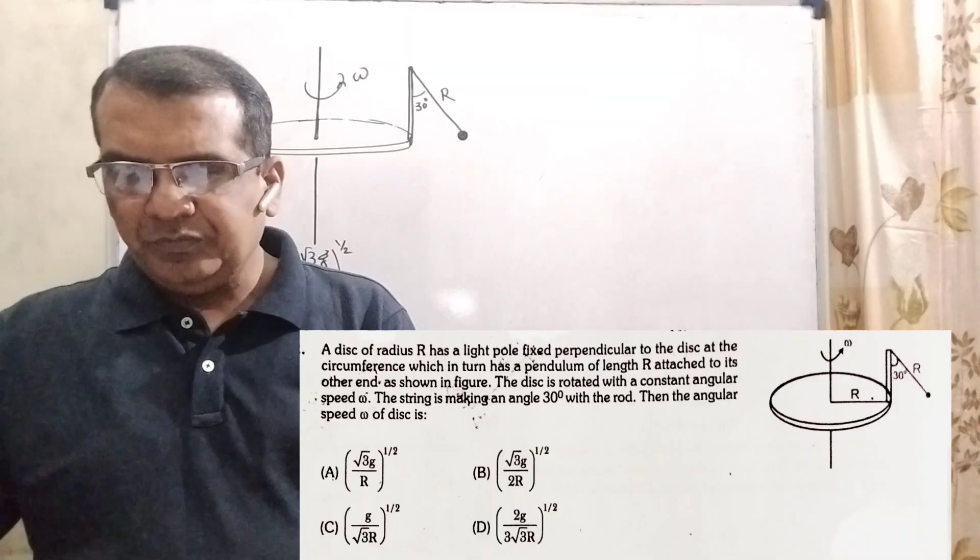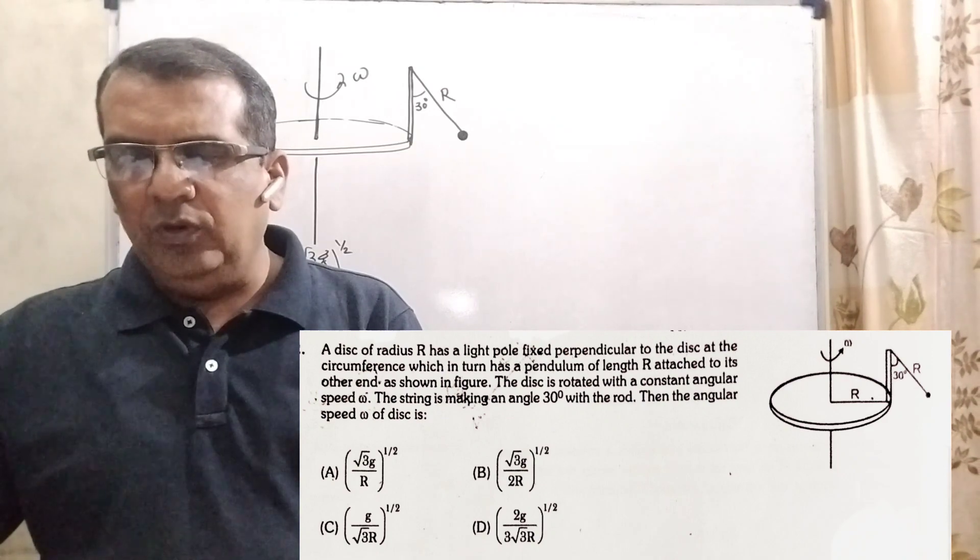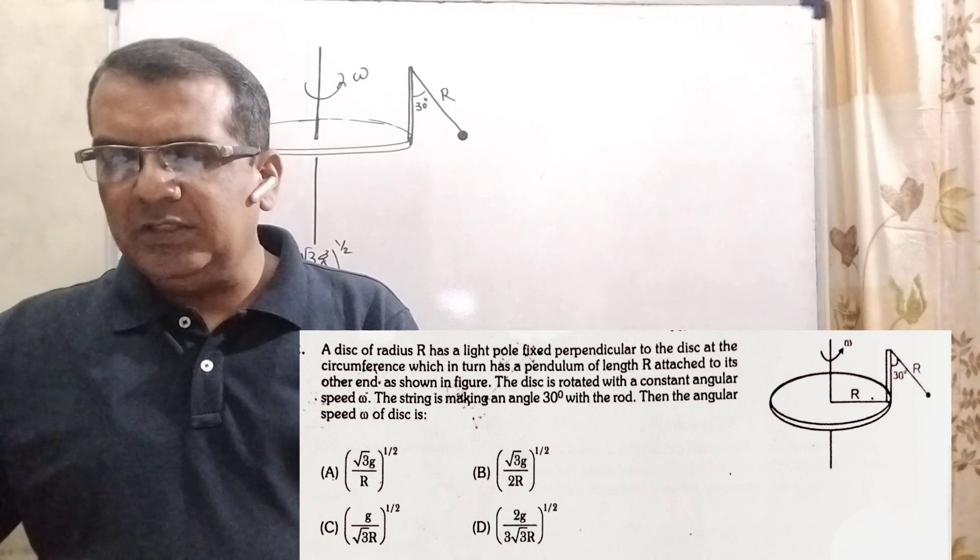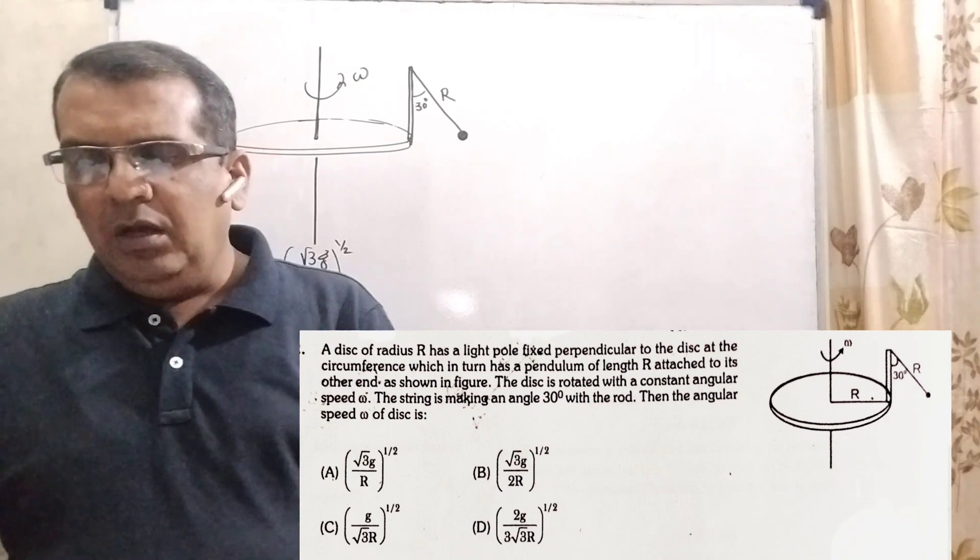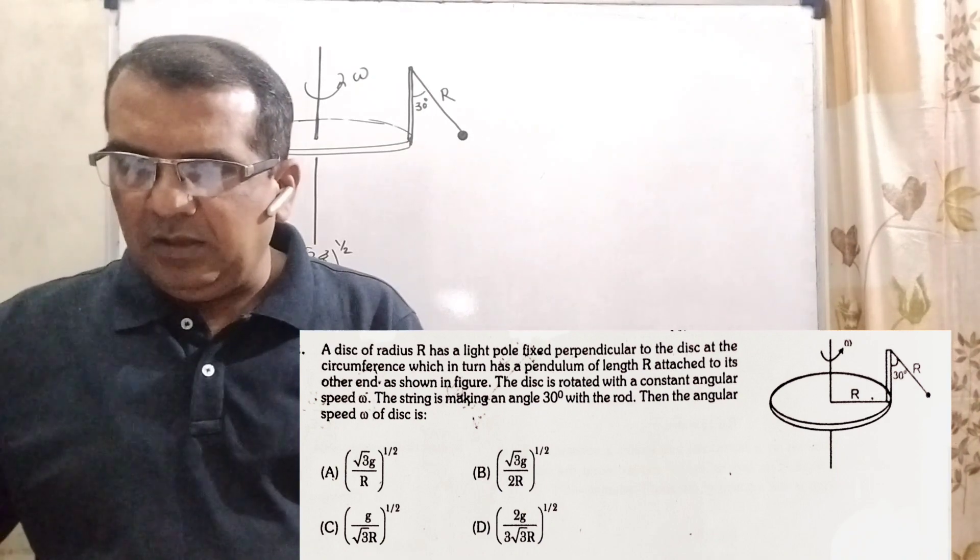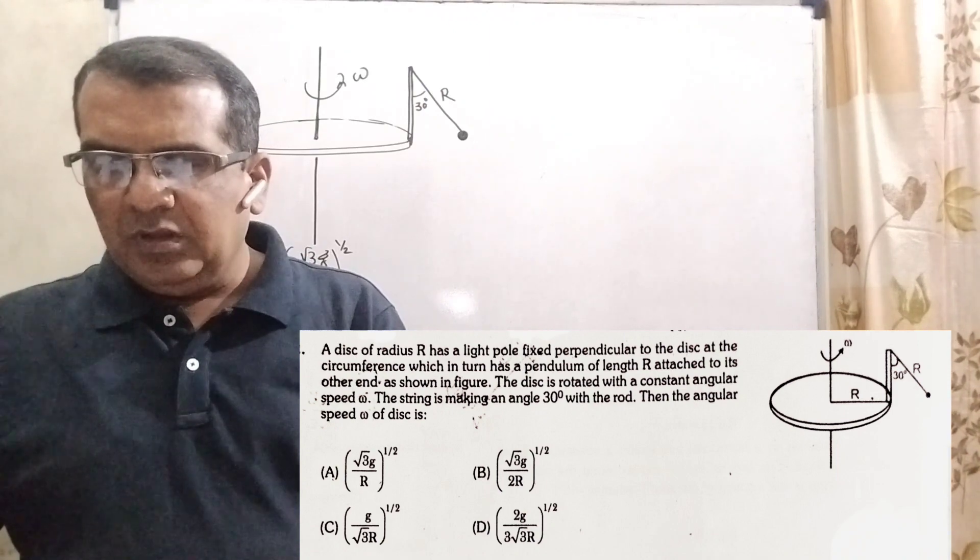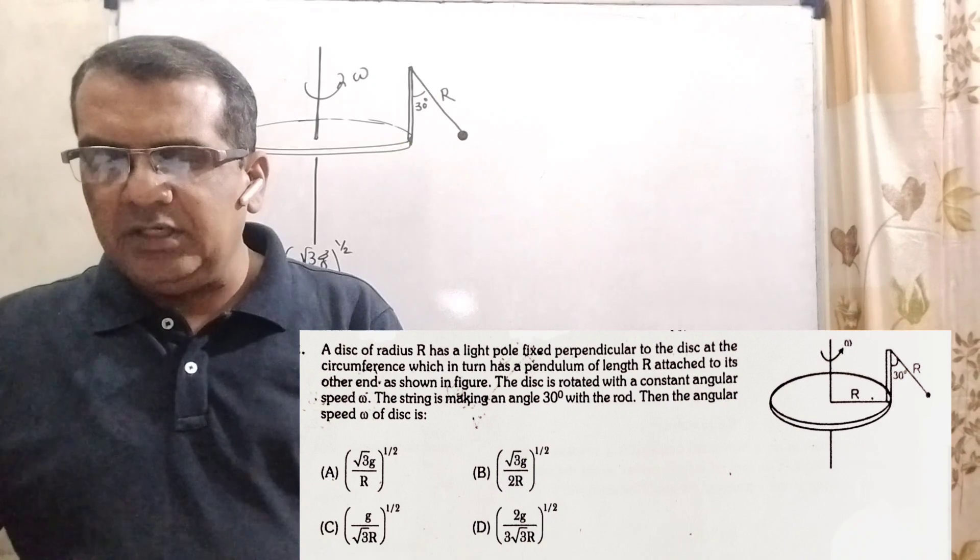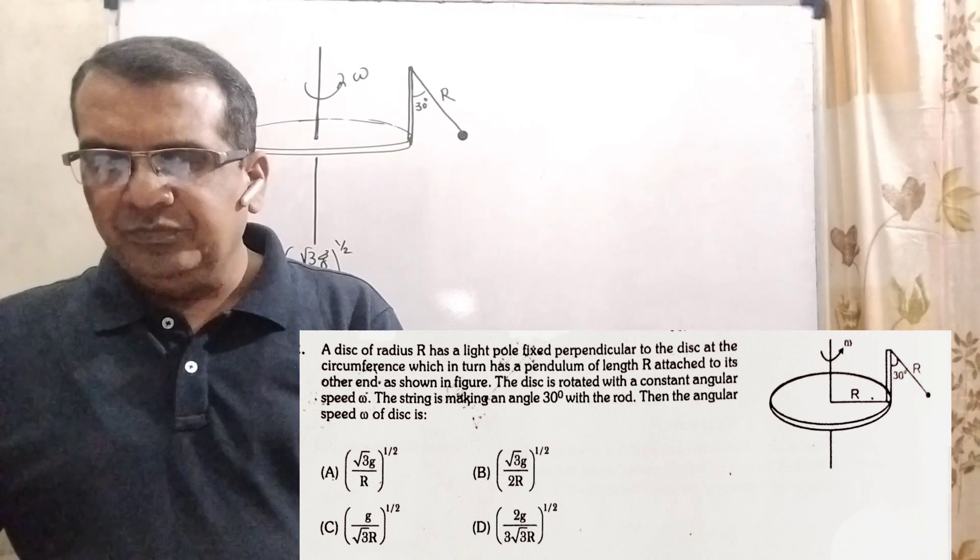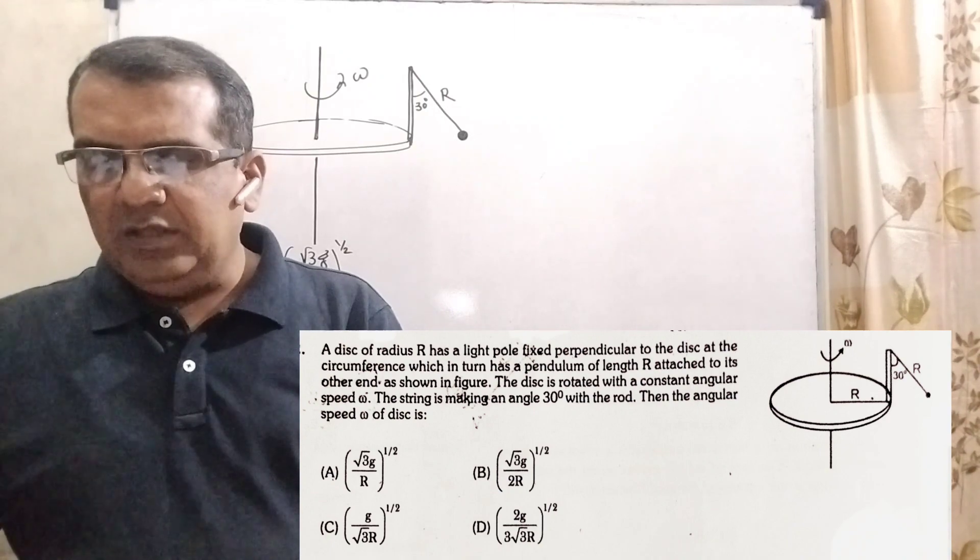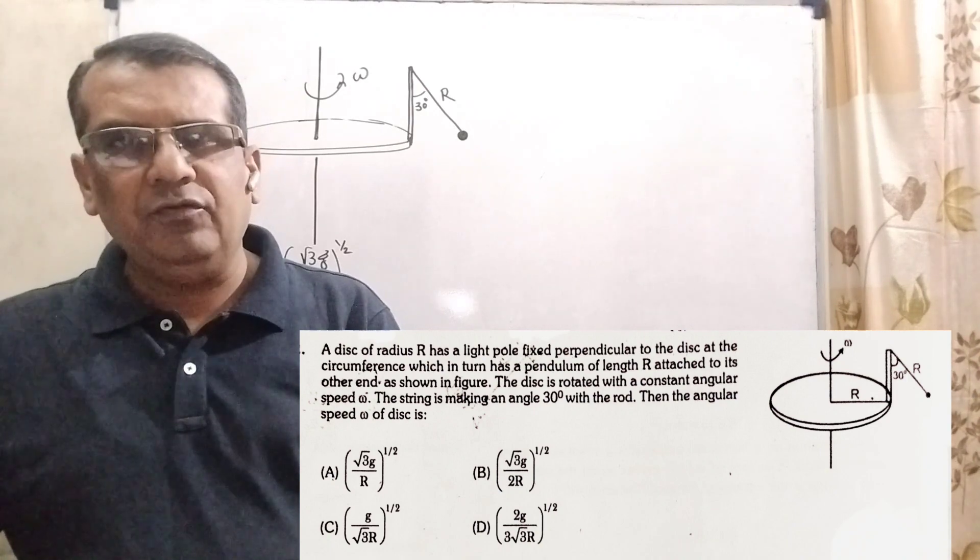Now, here is the question. A disc of radius capital R has a light pole fixed perpendicular to the disc at the circumference, which is turned, has a pendulum of length capital R attached to its other end. According to the figure, the disc is rotated with a constant angular speed omega.